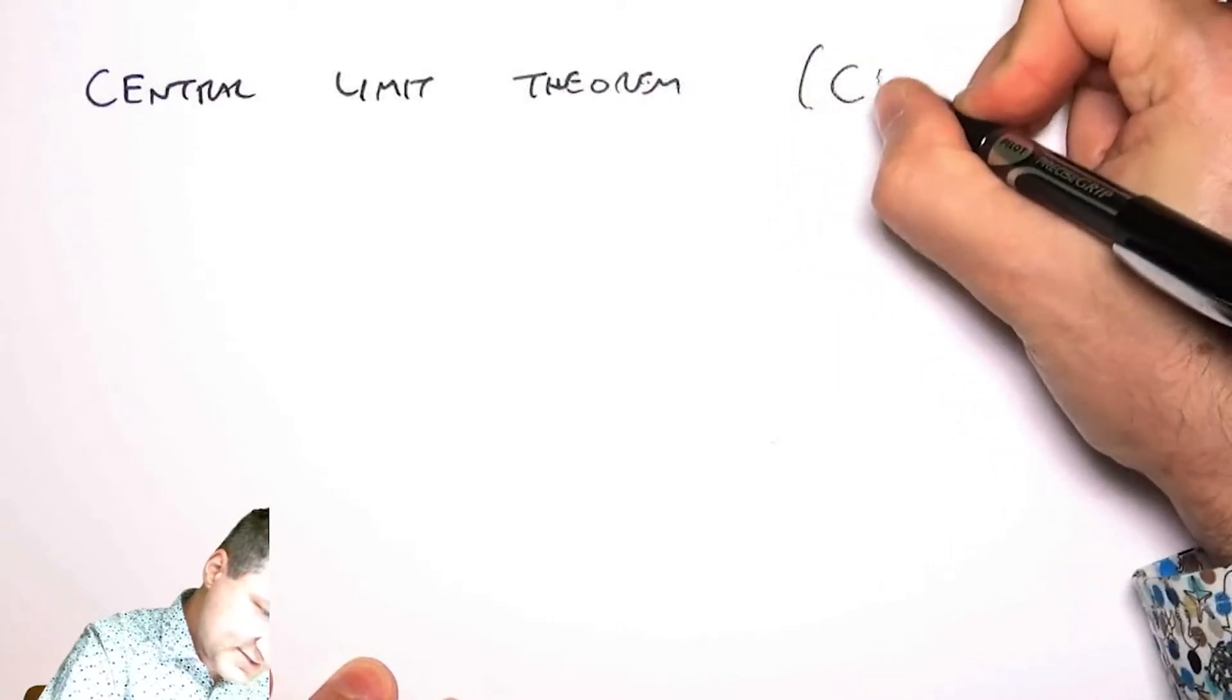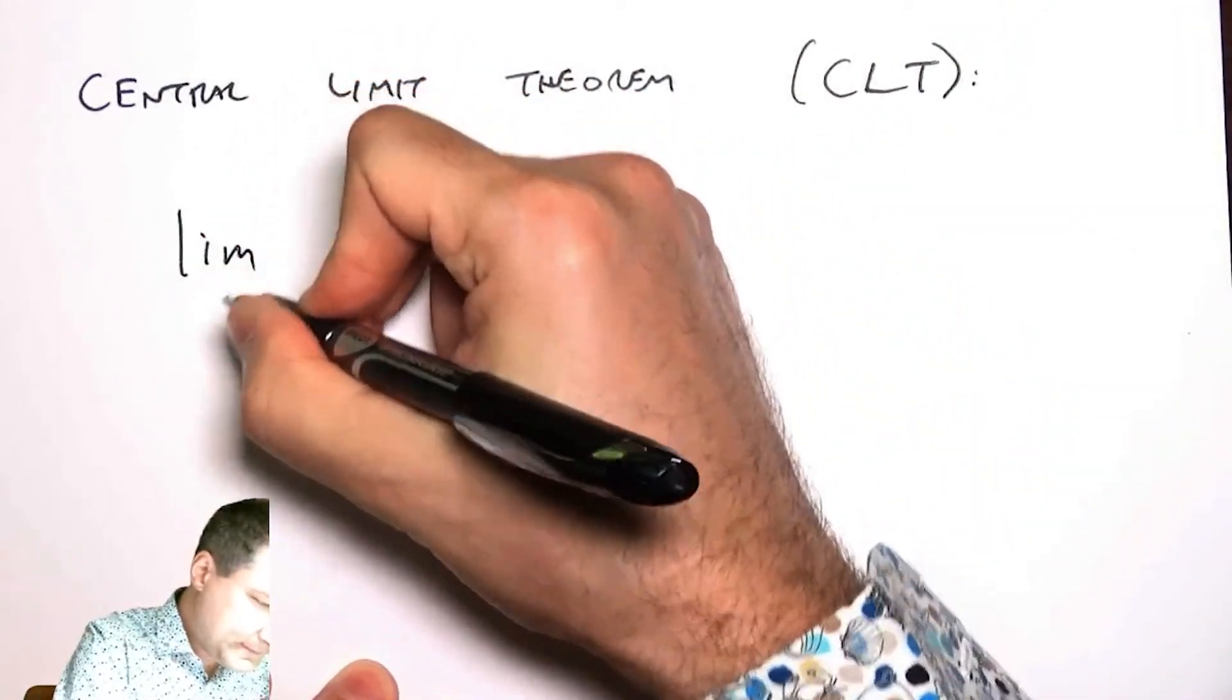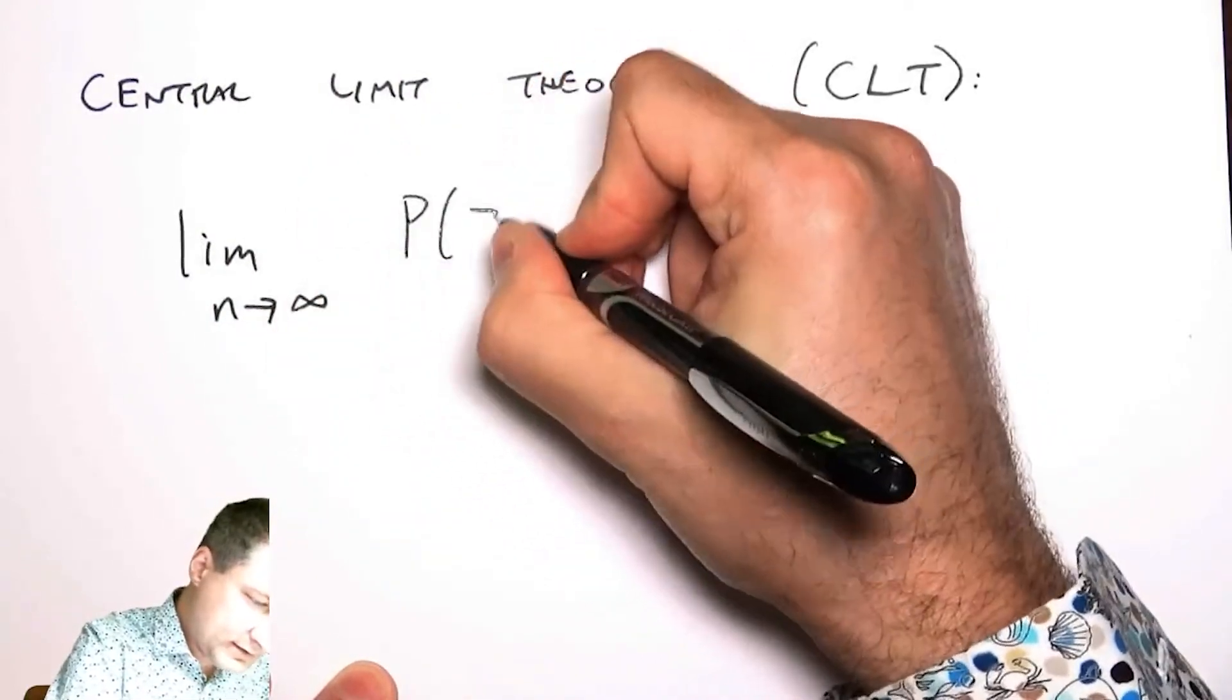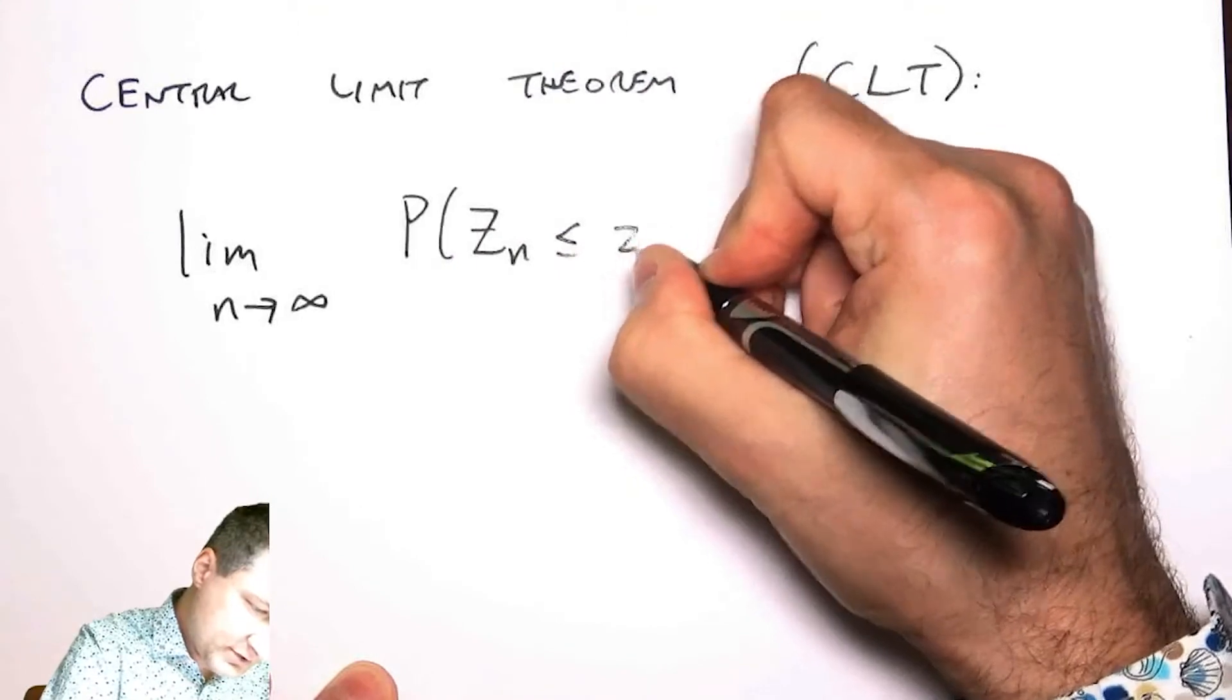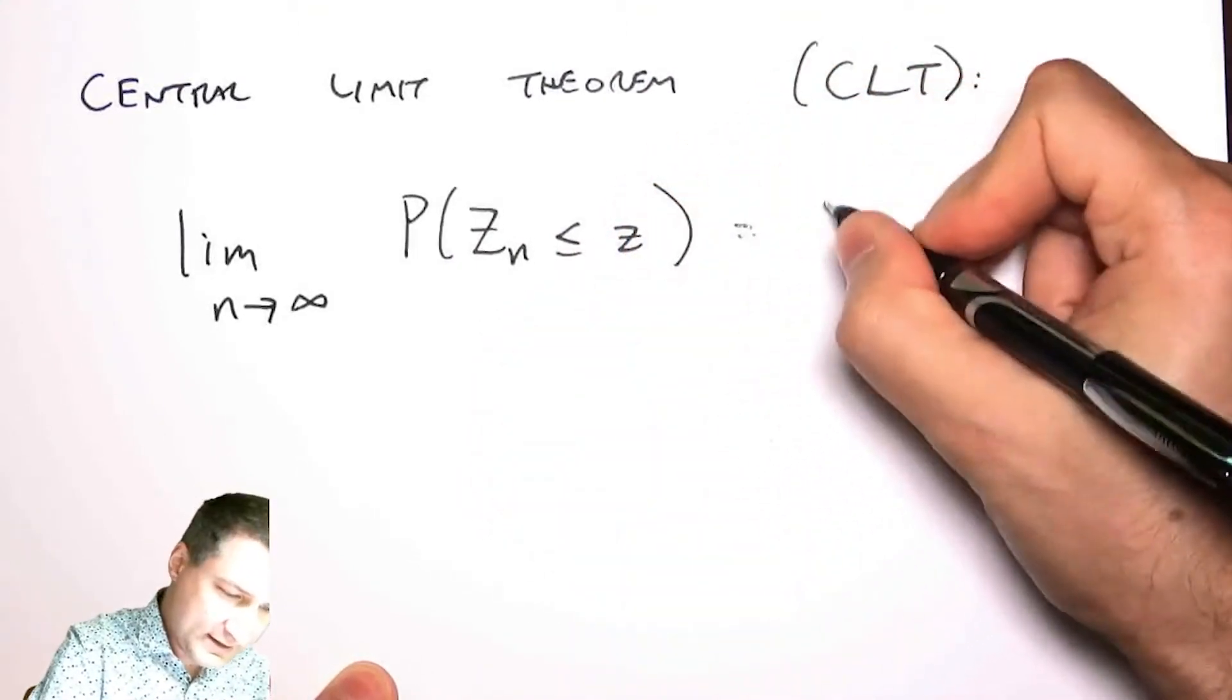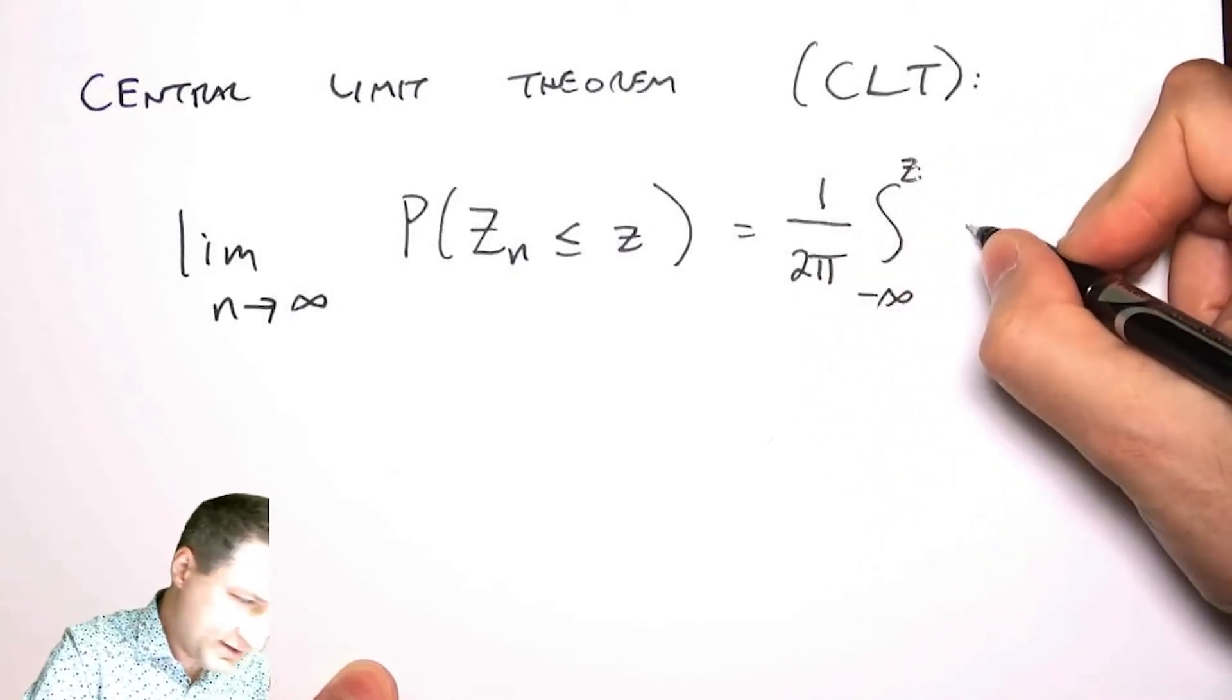The Central Limit Theorem, also sometimes CLT, says that the limit as I take more and more numbers, this is basically like the CDF of z.